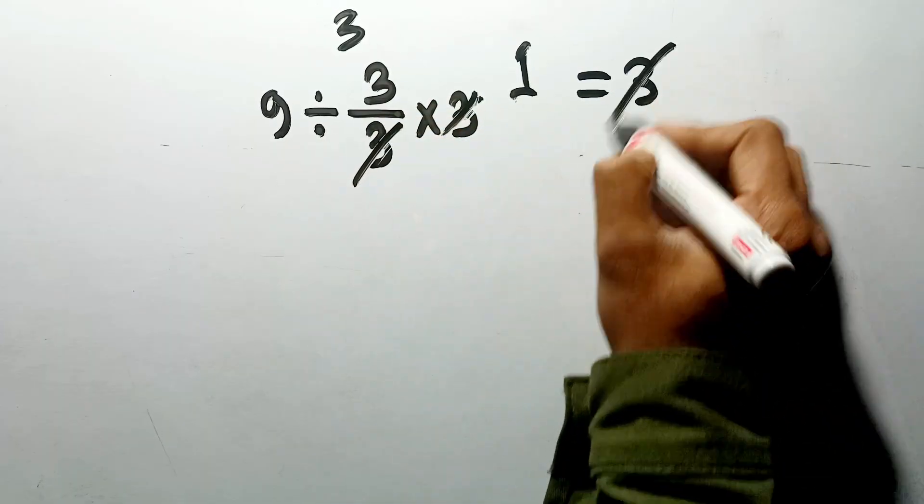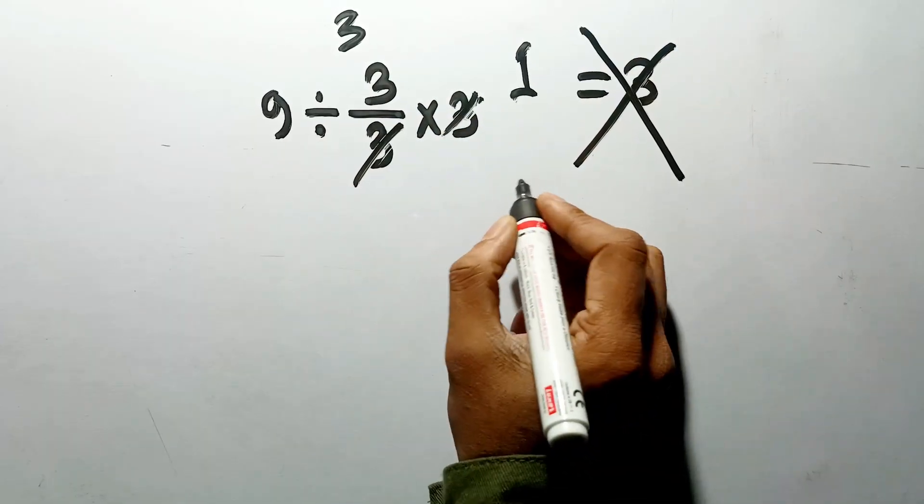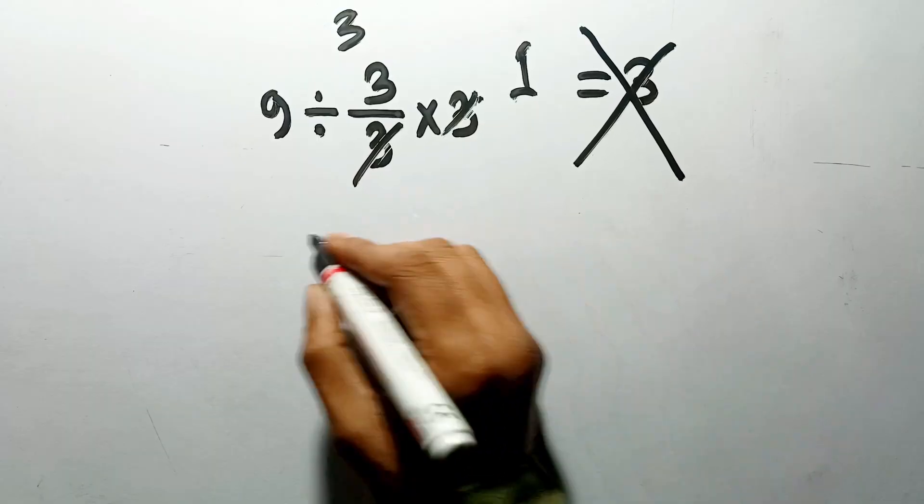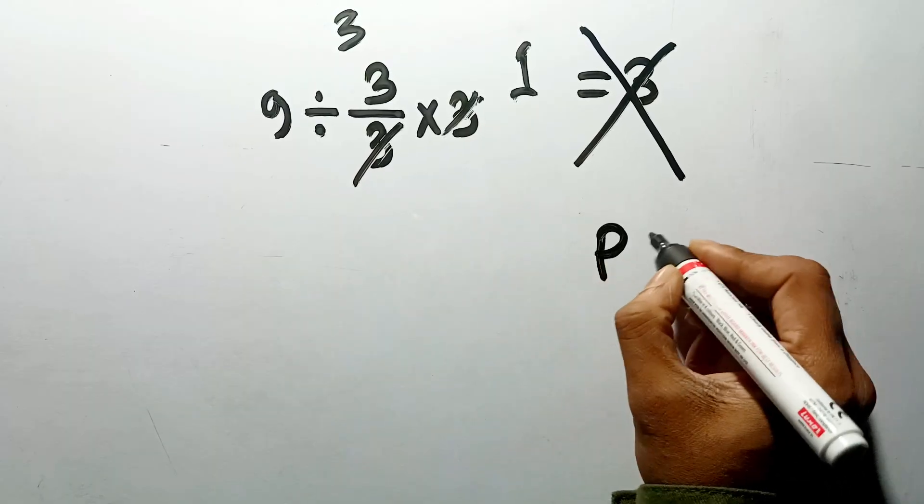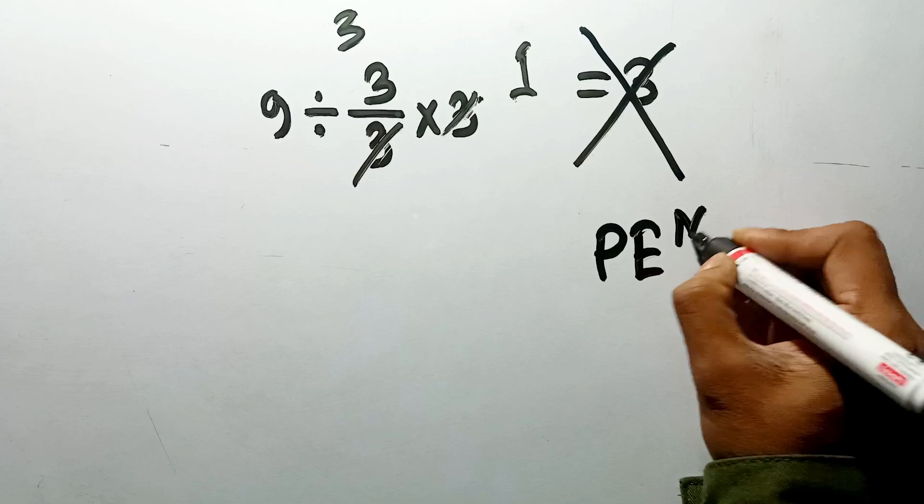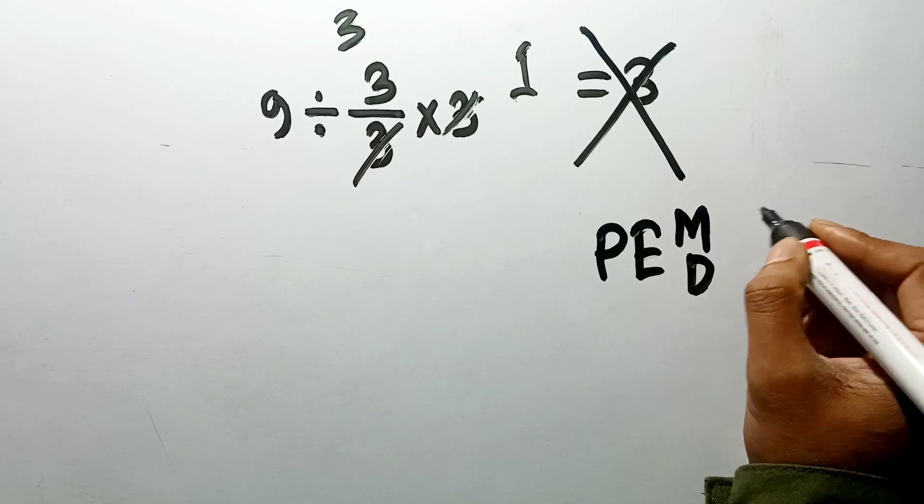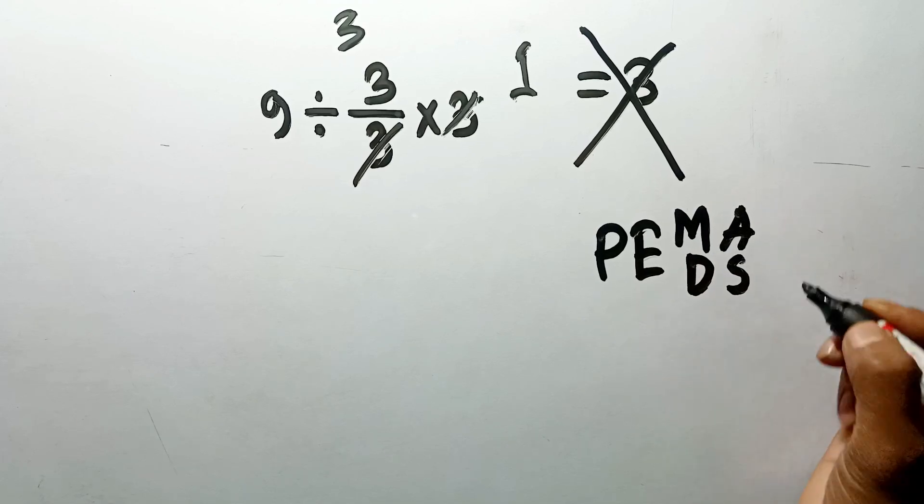But this answer is not correct, because according to the order of operations, first we have to do parentheses, then exponents, then multiplication or division, and finally addition or subtraction.